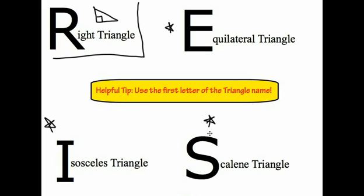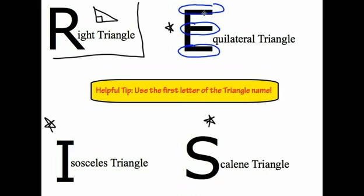Looking at the remaining three triangles, I wrote the first letter of each really big: equilateral has the big E, isosceles the big I, and scalene the big S. The hint is: if we look at the E, there are three lines in the E that are the same — the top, the middle, and the bottom. Therefore, in an equilateral triangle, three sides are the same.